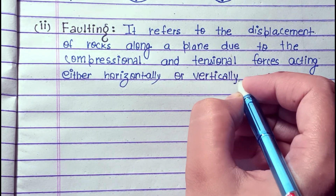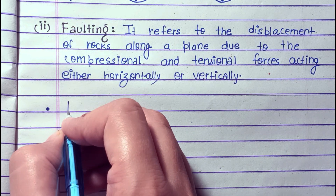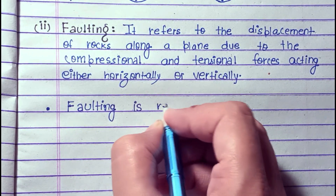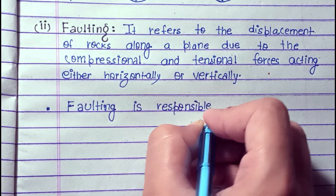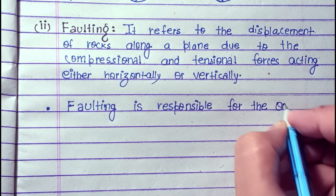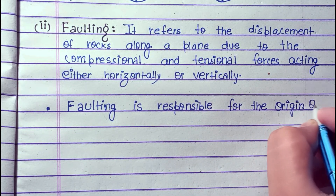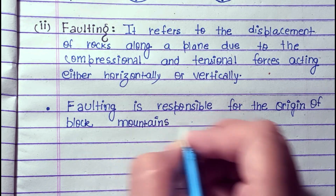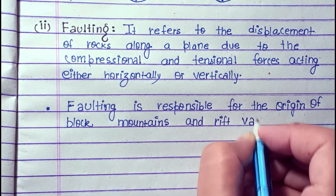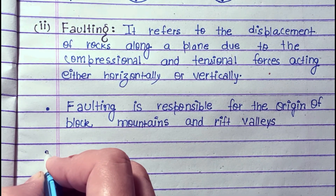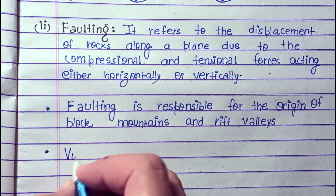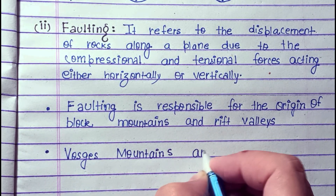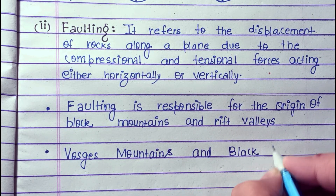Faulting refers to the displacement of rocks along a plane due to the compressional and tensional forces acting either horizontally or vertically. Faulting is responsible for the origin of block mountains and rift valleys.